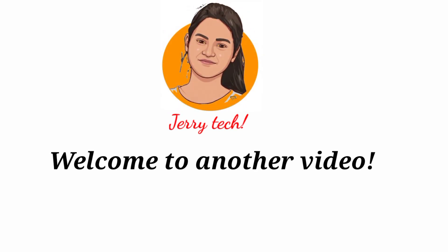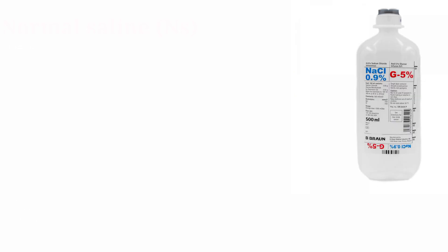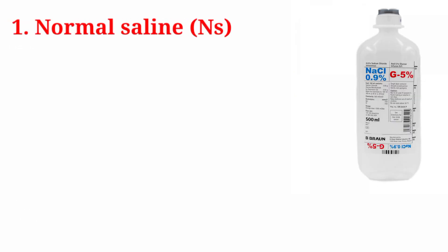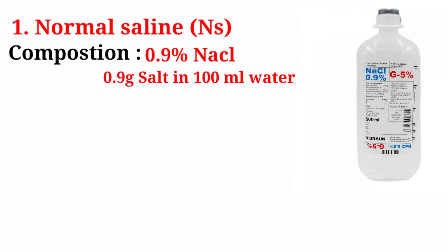Hello guys, welcome to another video lesson. Today's topic is types of intravenous fluid and their uses. Our first IV fluid is NS — Normal Saline. Composition: 0.9% sodium chloride, meaning 0.9 gram of salt in 100 ml water.